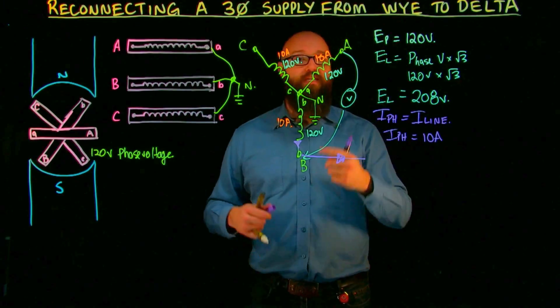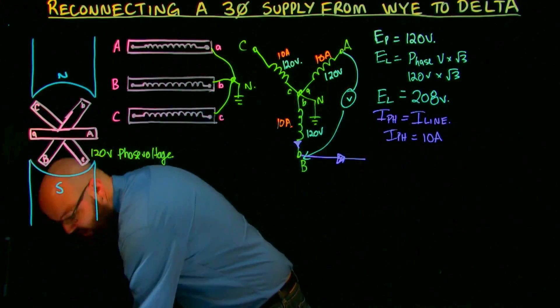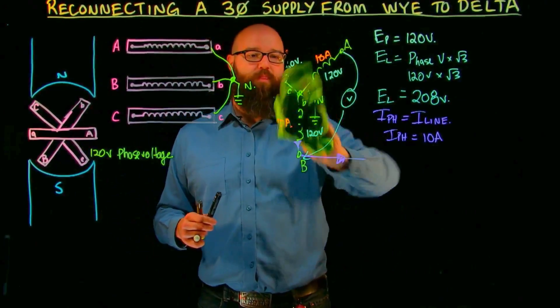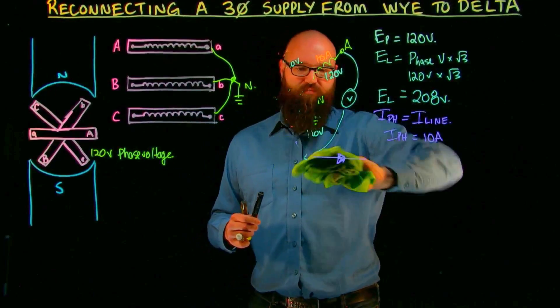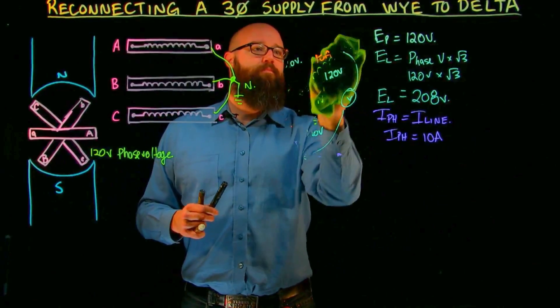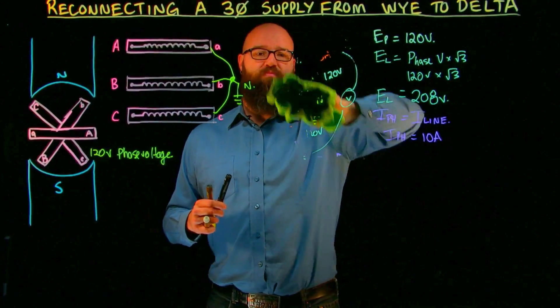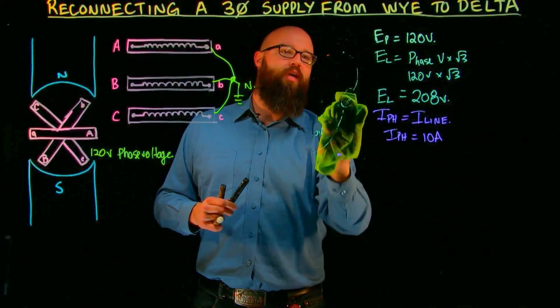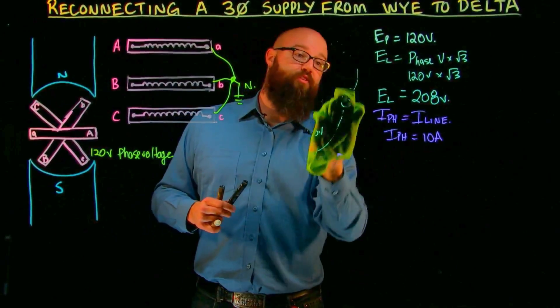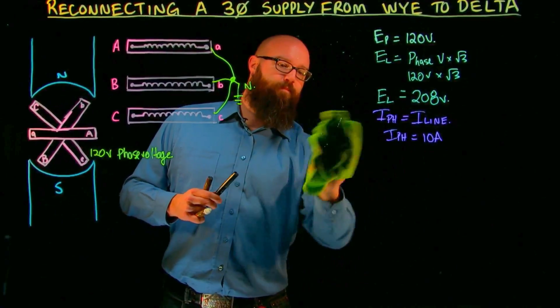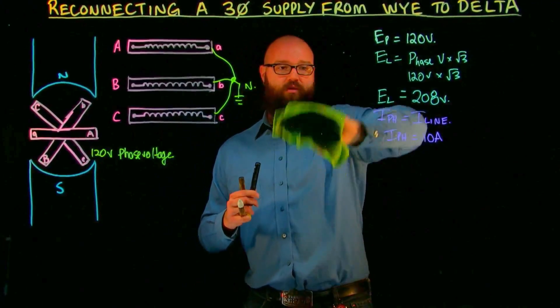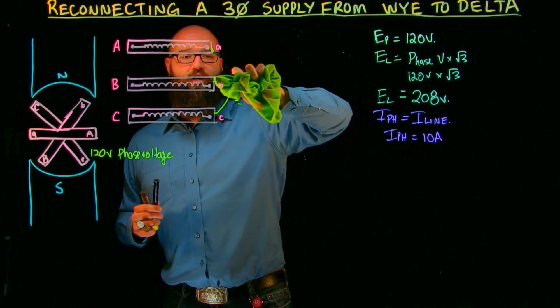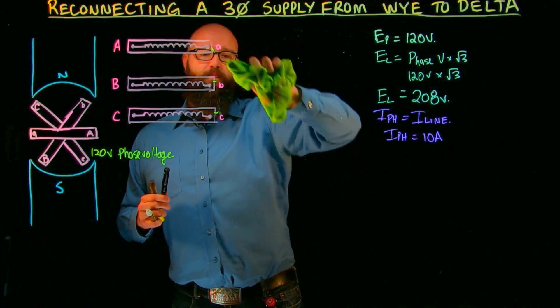So these are the numbers that we're going to observe with our Y connected circuit. We're going to see what happens when we switch this around to connected in delta. So let's erase what we've got here. So I'm going to leave our numbers up here so that when we do our calculations with our delta, we can compare the two and see what's really changed. I'm also going to remove our connection to our three coils here, because we're going to change the way we wire this up.